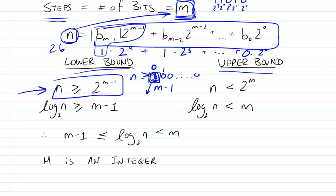We posited that n is greater than or equal to 2 to the m minus 1. If you take the log base 2 of both sides, you get that log base 2 of n is greater than or equal to m minus 1.